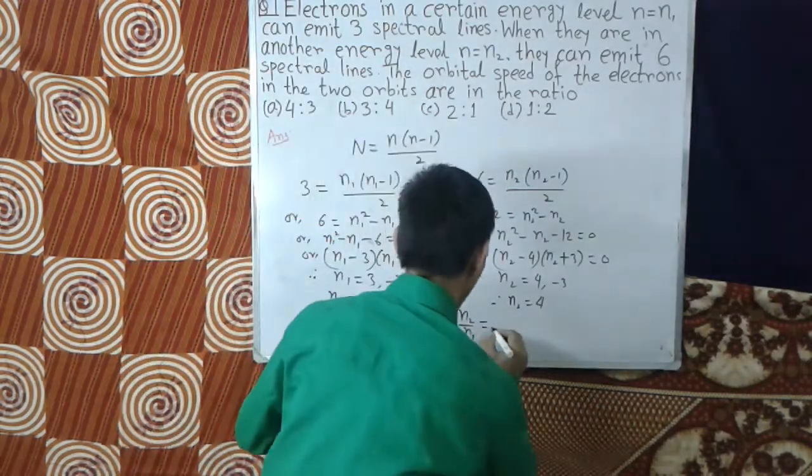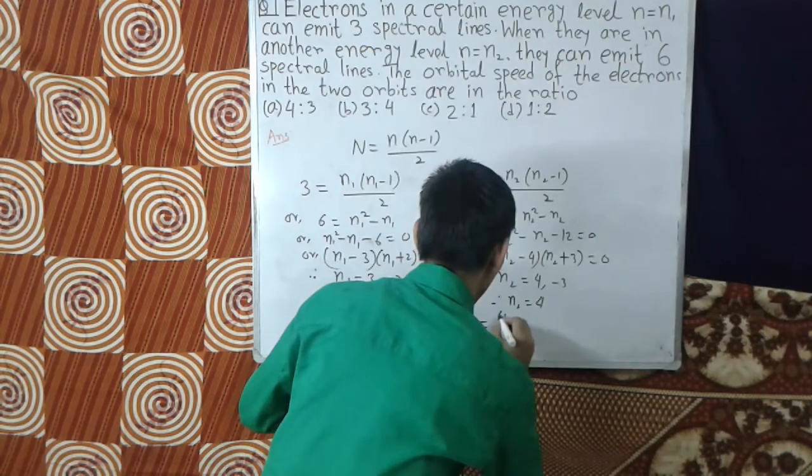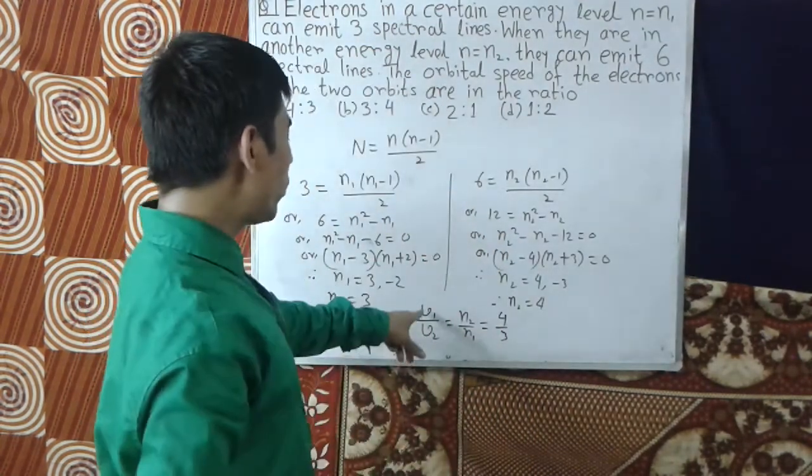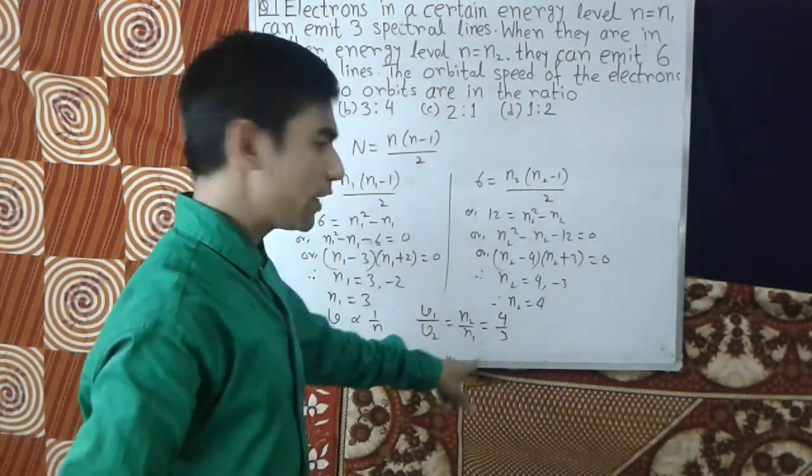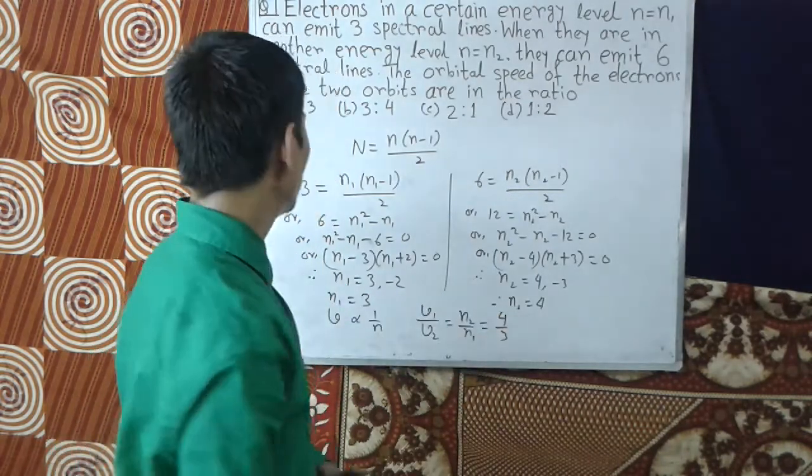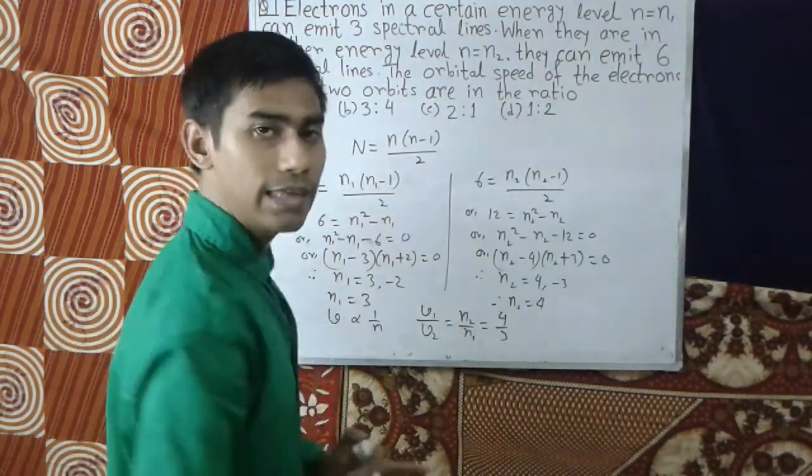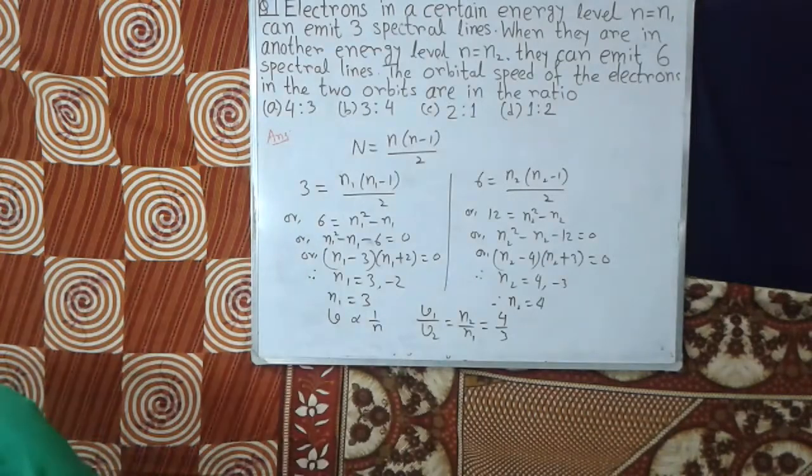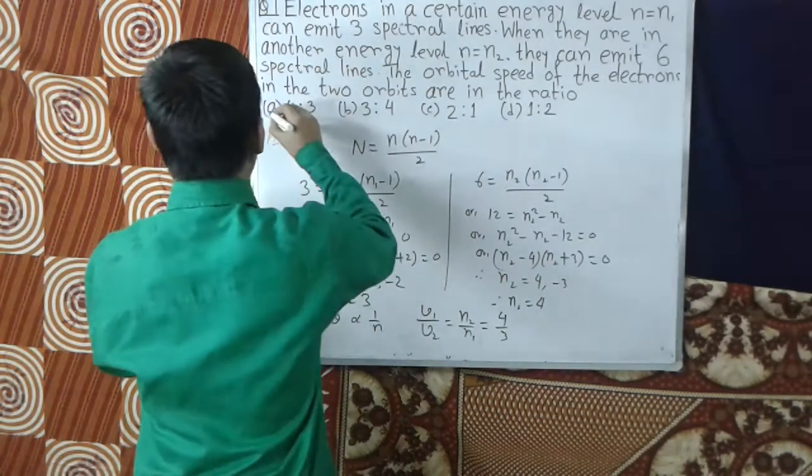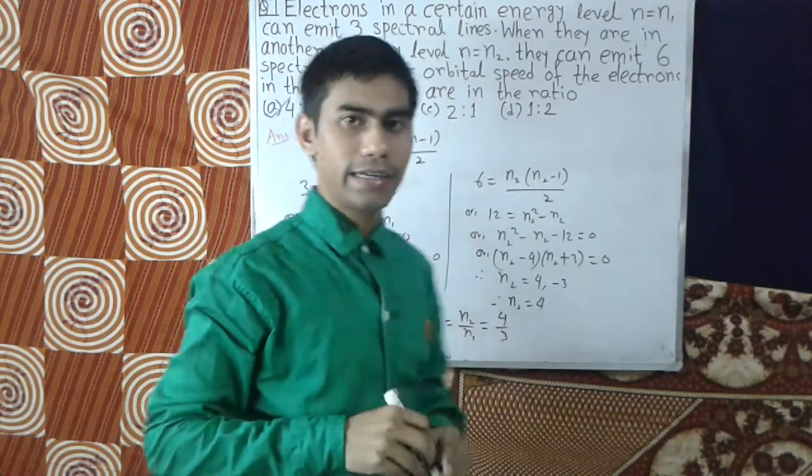So v1:v2 = 4:3. Therefore option A is the correct answer.